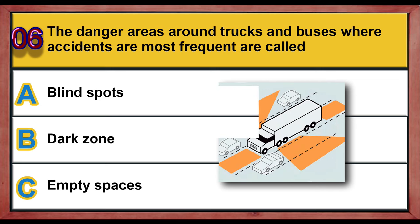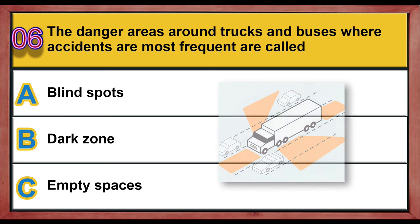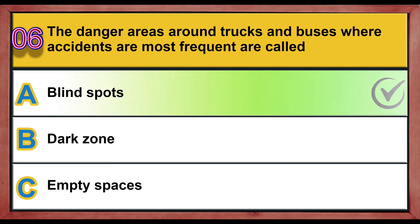Question 6. The danger areas around trucks and buses where accidents are most frequent are called: A. Blind spots. B. Dark zone. C. Empty spaces. Correct answer is A: Blind spots.